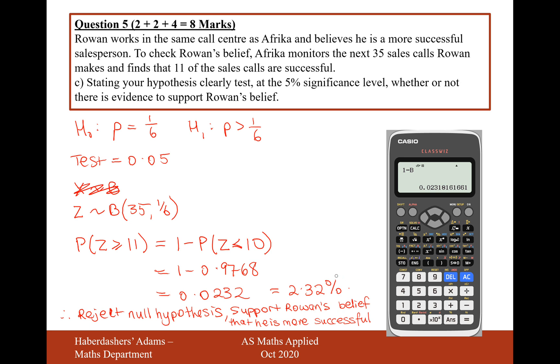So there we are, that's the answer for question five. Just to highlight what this 2.32 is representing here, this is the p-value for this test. 2.32, there's a 2.32% chance that if the probability was 1 sixth, that Rowan would be making 11 or more successful phone calls. And that's such a low probability that we have to assume that maybe the probability is not 1 sixth, and maybe that the probability is higher than 1 sixth. So we've had less than 5% chance that Rowan's achievement of getting 11 out of 35 phone calls or more has been successful. So therefore, this probability is so low that it must be the alternate hypothesis that is true, which actually Rowan is generally a better salesperson, or his probability of each successful phone call is higher than 1 sixth. Yeah, so there we are. So that's the answer for question five, worth eight marks in total. Let's move on to question six.